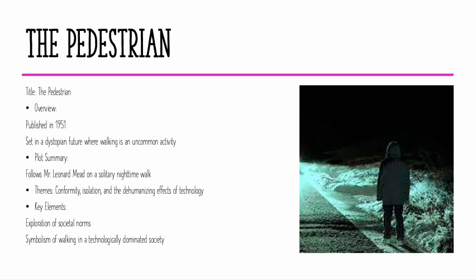Now we'll have a short glance at one of his works: The Pedestrian. This short story was published in 1951 and is set in a dystopian future where walking is an uncommon activity. The plot follows Mr. Leonard Mead on a solitary nighttime walk. Themes include conformity, isolation, and the dehumanizing effects of technology. Key elements include the exploration of societal norms and the symbolism of walking in a technology-dominated society.